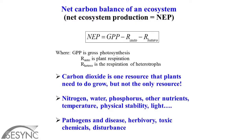Liebig's Law of the Minimum applies to climate change and elevated CO2 as well. You can increase CO2, but there are other things that are likely to become important. Carbon dioxide is only one resource that plants need to grow, but not the only resource. Nitrogen, water, phosphorus, other nutrients, temperature, physical stability, light — all of these are important ecosystem characteristics that control rates of plant growth.